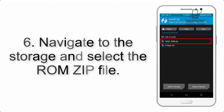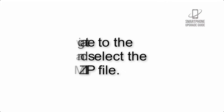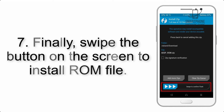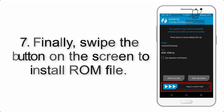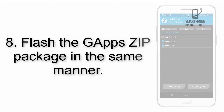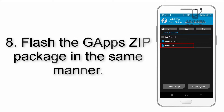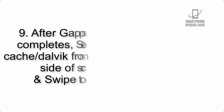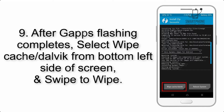Step 6: Navigate to the storage and select the ROM zip file. Step 7: Finally, swipe the button on the screen to install the ROM file. Step 8: Flash the GApps zip package in the same manner.